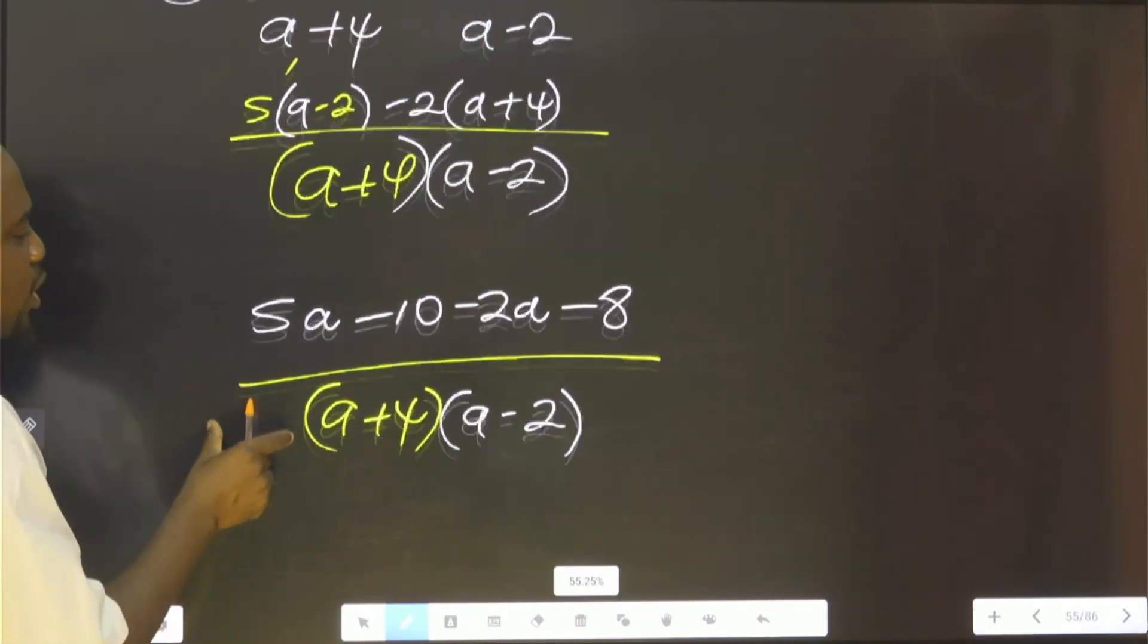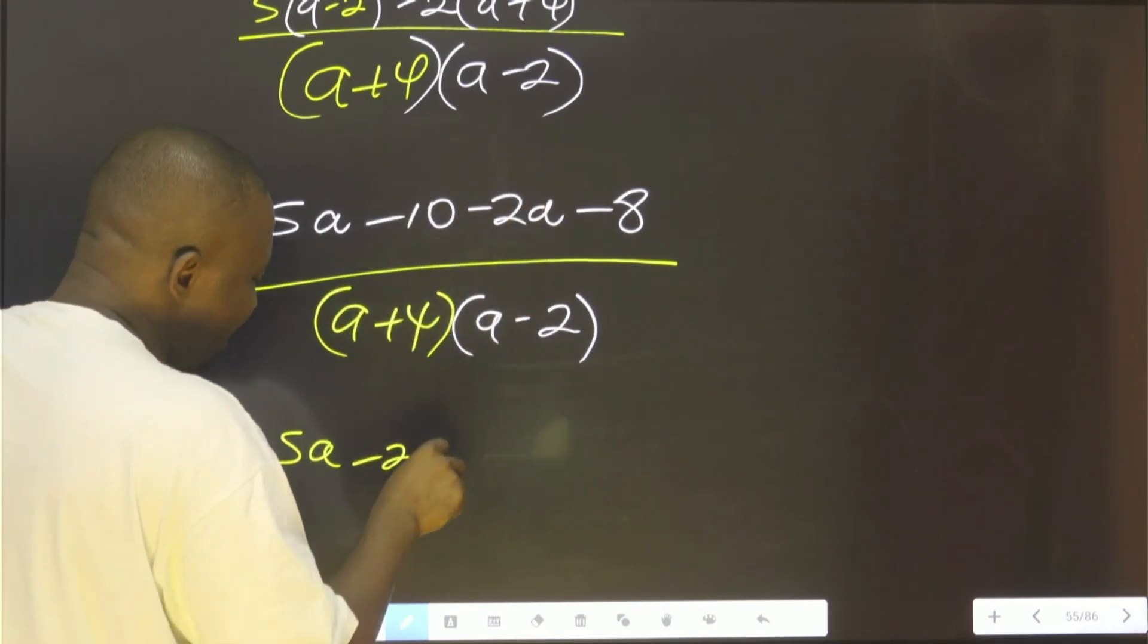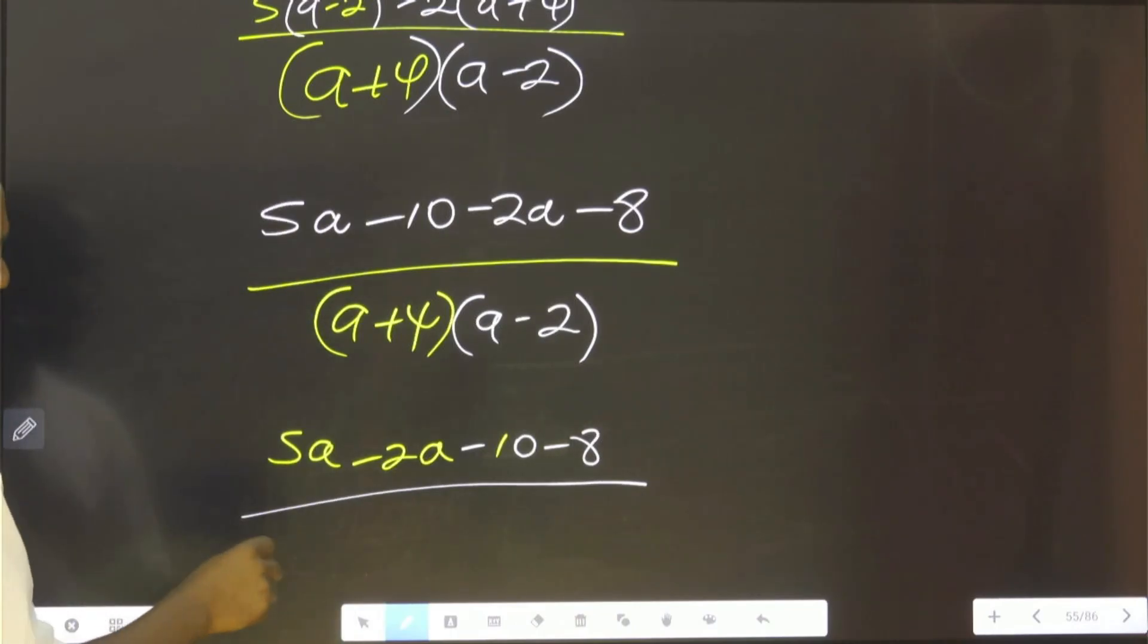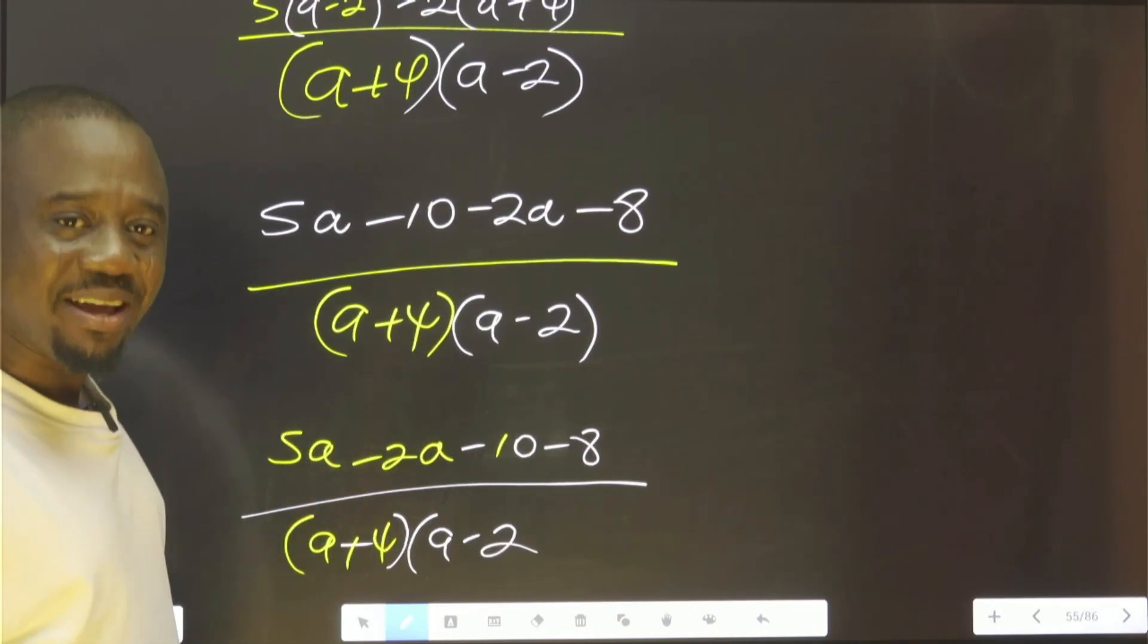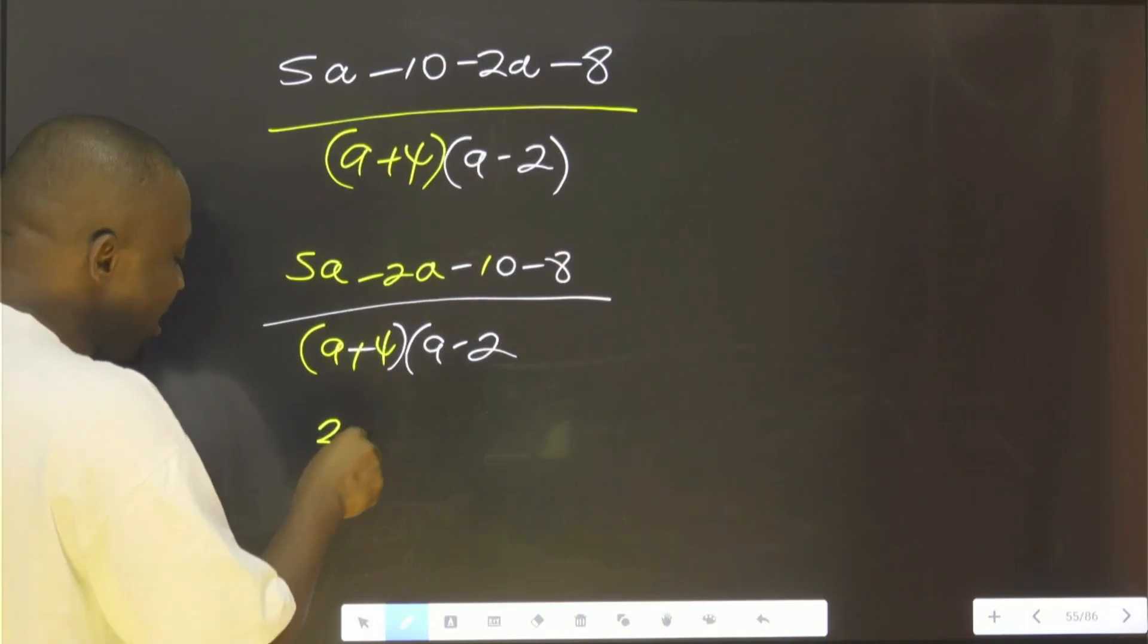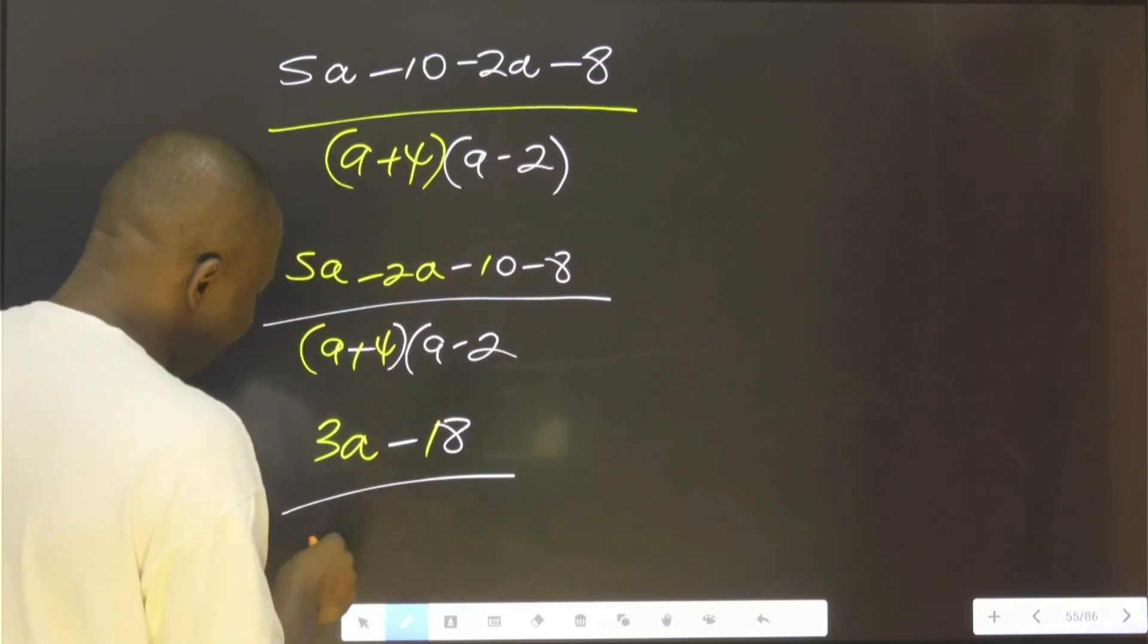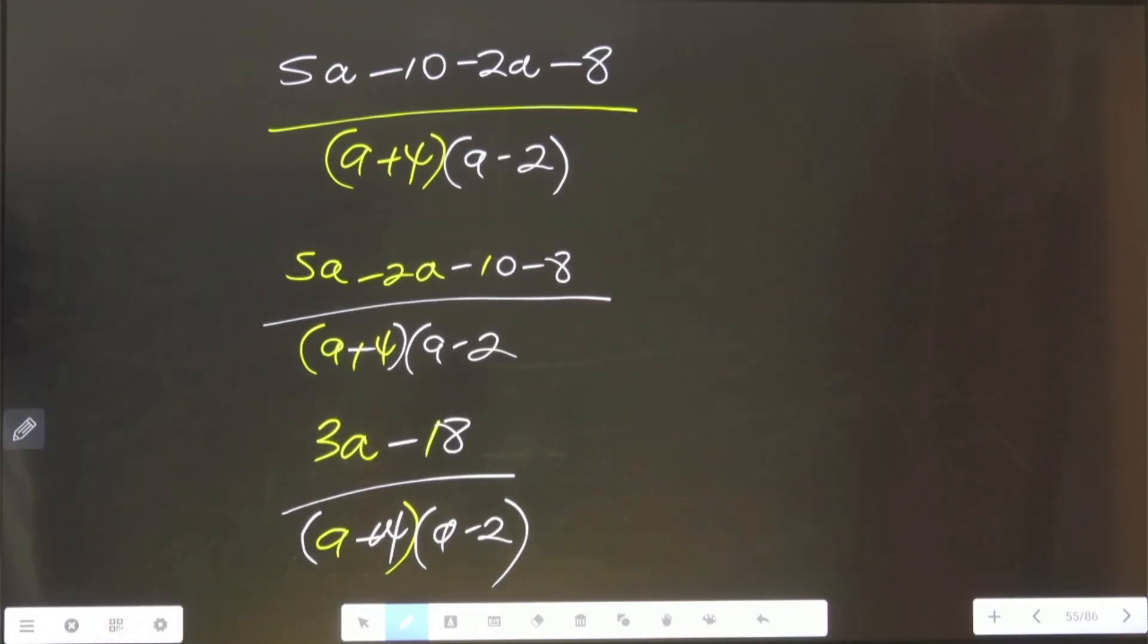The next thing we need to do is to collect the like terms. We bring this one here. Those without a will join themselves on one side. These two will produce 3, a. 5, a minus 2, a is 3, a. That is 3, a minus 10, minus 8. That is minus 18 all over a plus 4, a minus 2. This is the final answer.